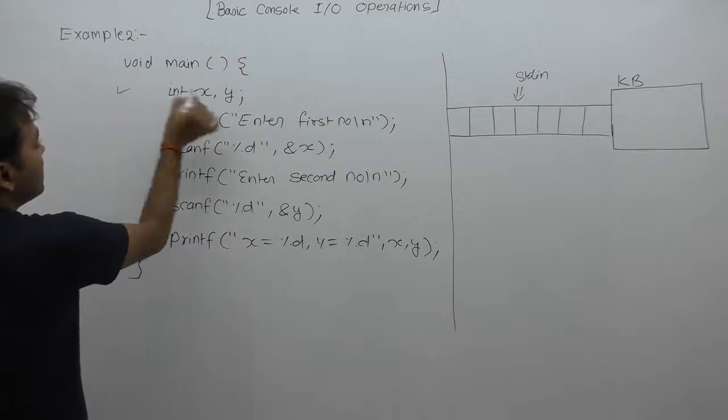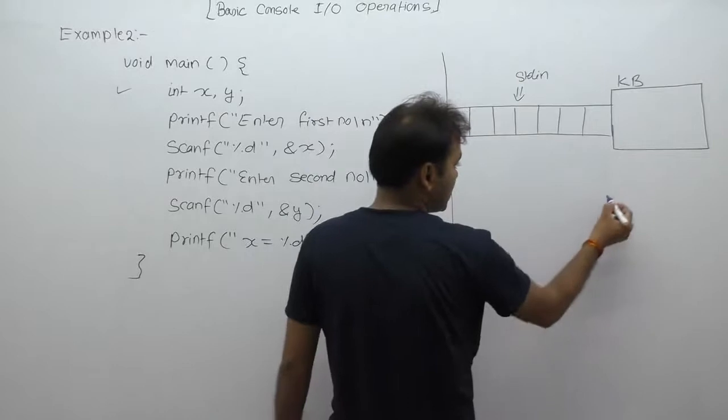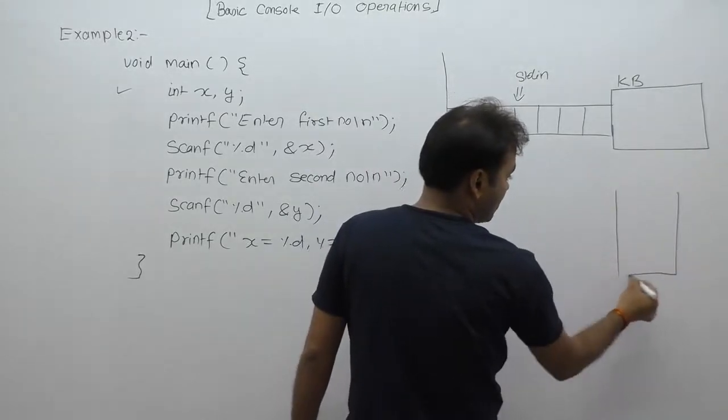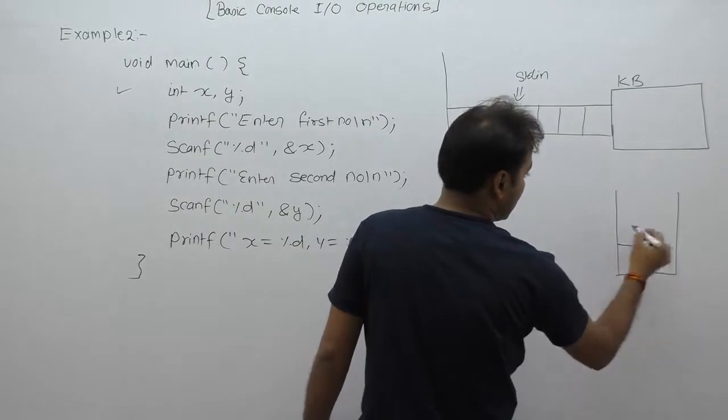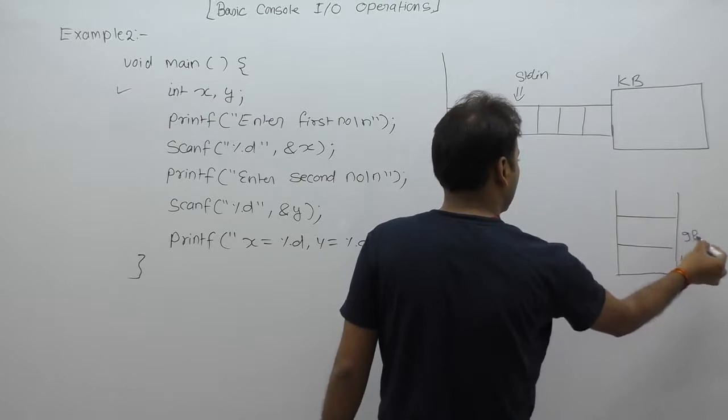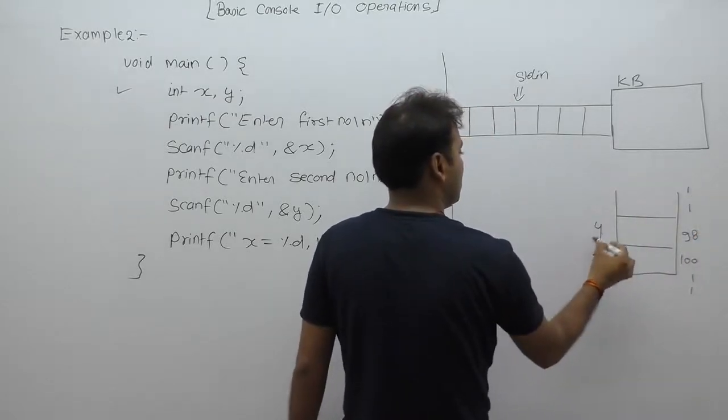We are creating space for local variables x and y in the form of a stack memory. We are creating two variables suppose that address is 100 and 98 for variable x and variable y.